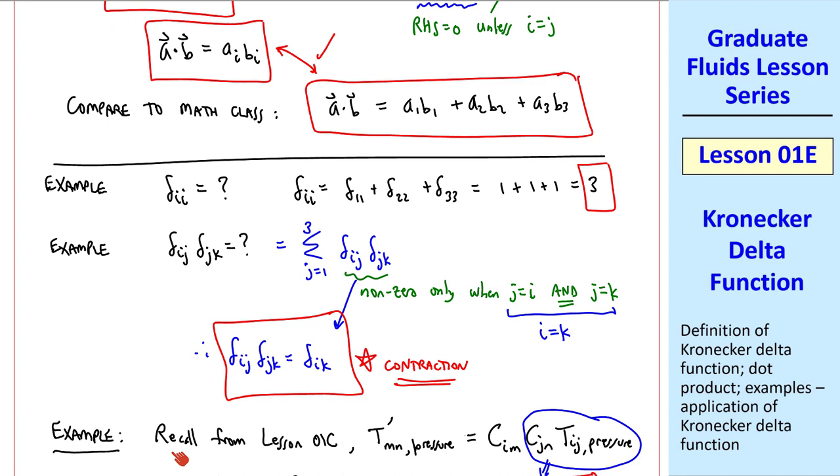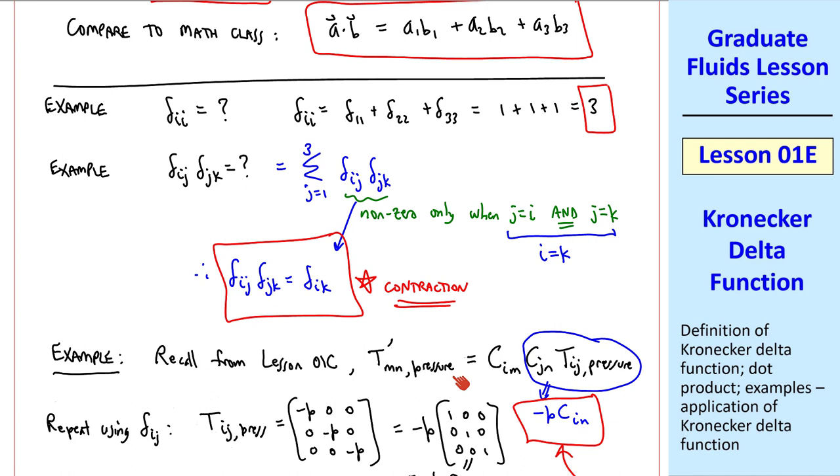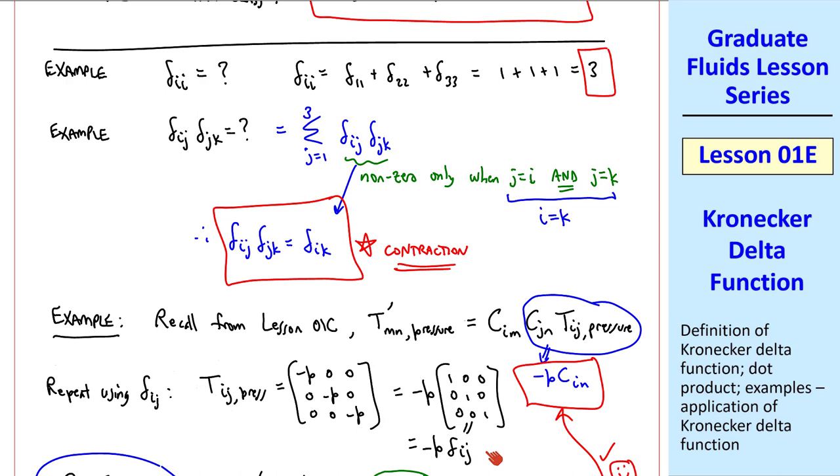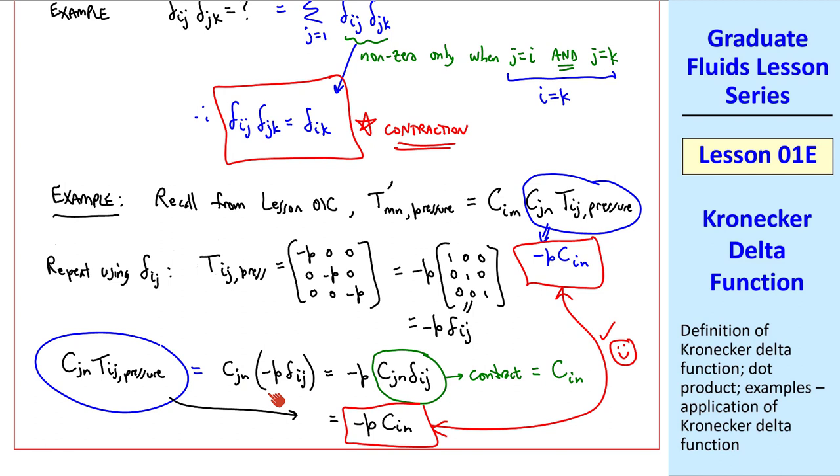Let's do another quick example. Recall from lesson 1c, when we were rotating axes, we had this expression for the new axes using cosine matrices, where we're talking about the pressure component of the stress tensor Tij. After much algebra, we found that this term circled in blue is equal to minus p c i n. Let's redo this using delta i j. T i j pressure is minus p delta i j. So this term in blue can be written as c j n negative p delta i j, which we can contract and get c i n. So this term in blue becomes negative p c i n, which agrees with what we got previously.